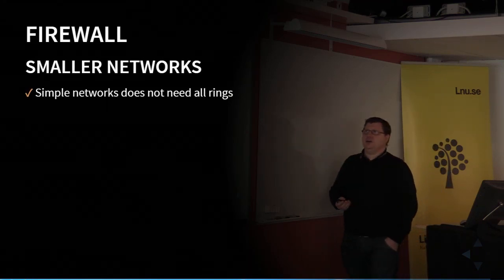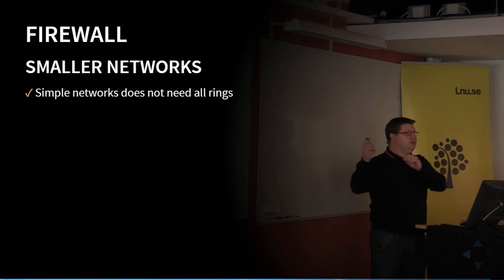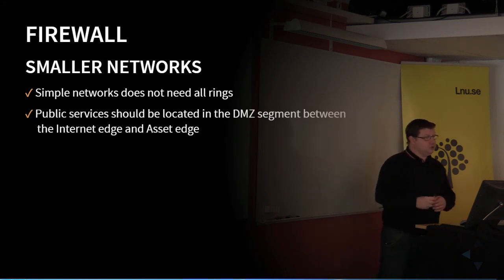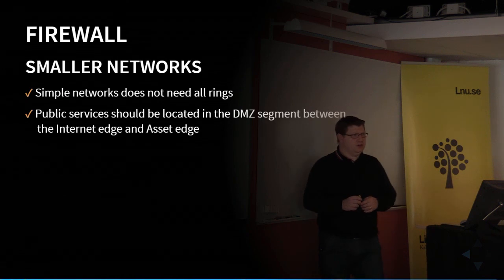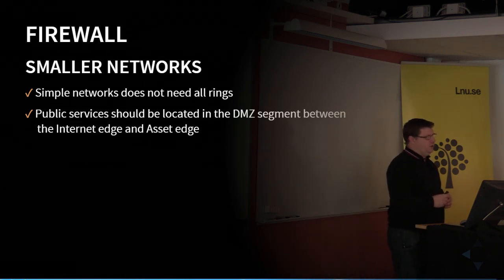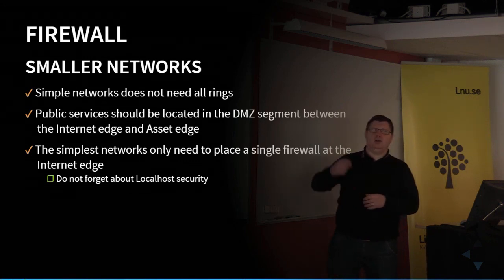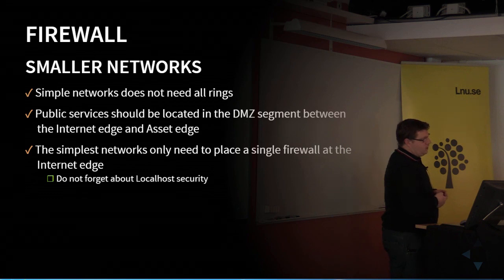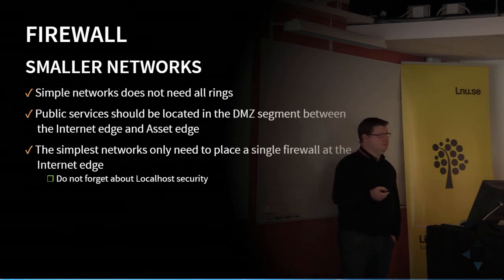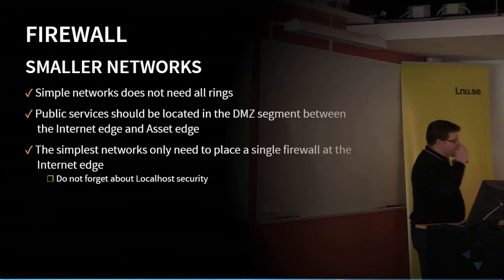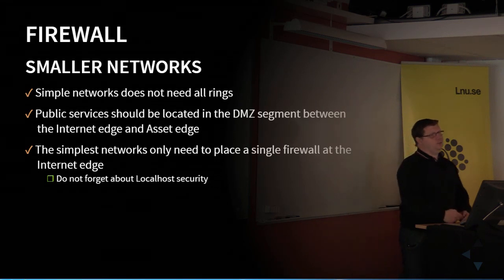The picture I showed is for quite a big company. Usually we have smaller networks and don't need all these rings. You should, however, put your publicly accessible servers and services in a separate network — we usually call that a DMZ. In a simple network or many companies, there will be only one firewall: the internet edge. The important thing is to not forget local host security and never disable the firewall. You could disable it temporarily when troubleshooting, but always re-enable it and open the correct ports afterward.